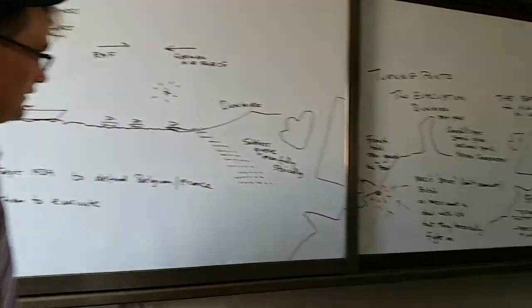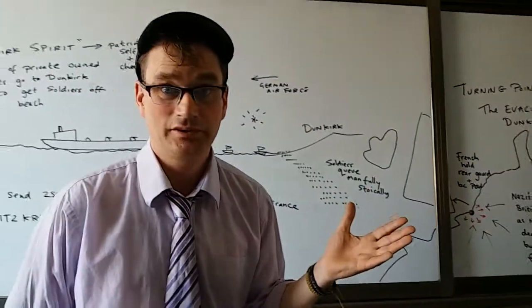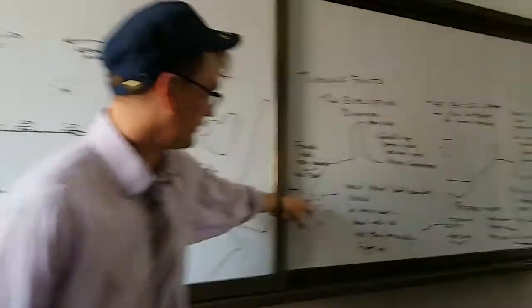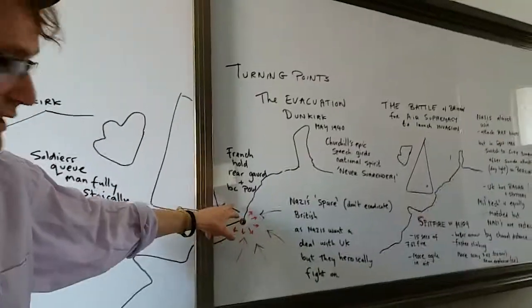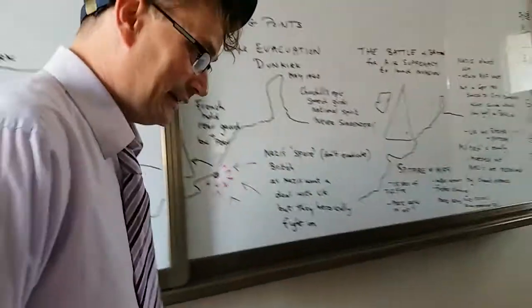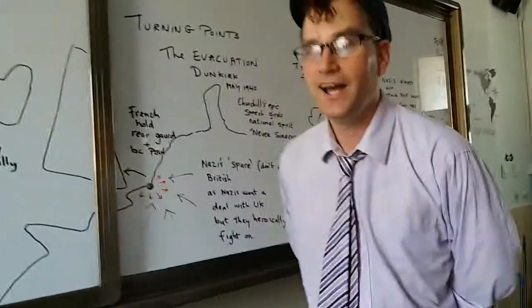They managed to get away, miraculously, it's called the miracle of Dunkirk. At this point, the British have got no money. They are bankrupt.